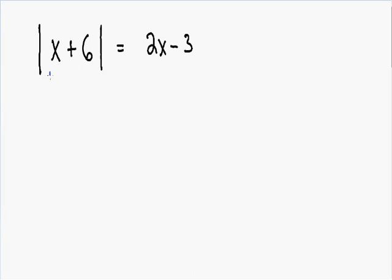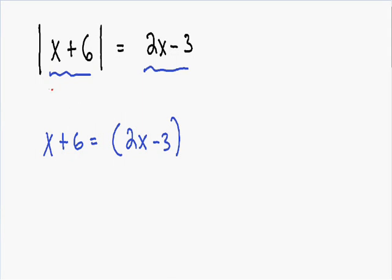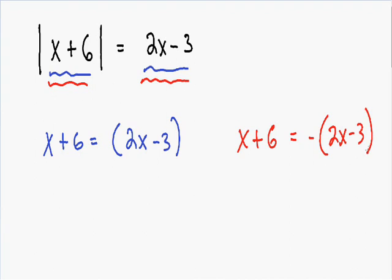We need to take the inside of the absolute value and make it equal to the right side. So we have x plus 6 is equal to 2x minus 3. We also need to take the inside of the absolute value and make it equal to the negative value of the right side. So we have x plus 6 is equal to the negative value of 2x minus 3.